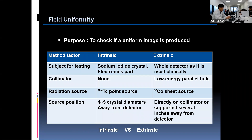Once the energy peaking is verified, we proceed to the uniformity test. Field uniformity is the ability of a scintillation camera to produce a uniform image with a radioactive source that provides a uniform distribution of photons. The test can be done either intrinsically or extrinsically.